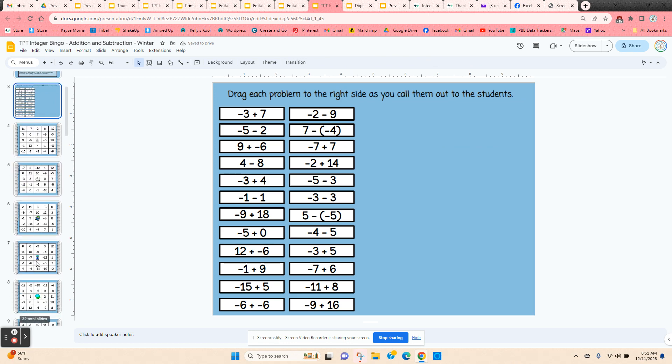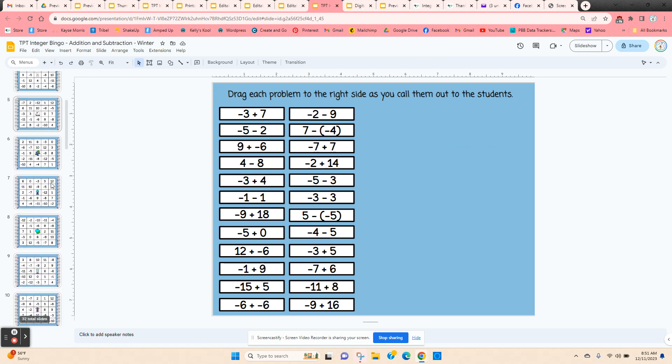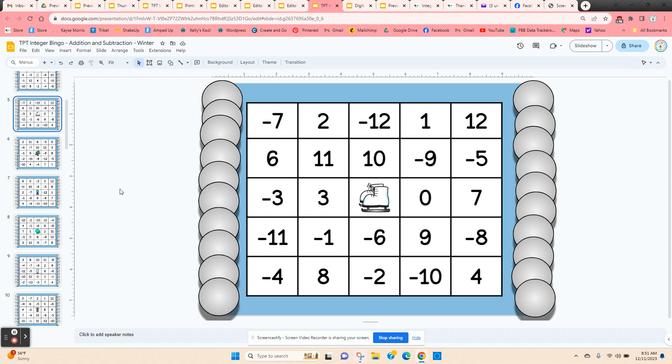I give the students editing rights so they can scroll up and down until they find the bingo card that they want. I have my students click in one of the chips and just type their name or initials. And that way the other students know that this board's been claimed and they need to go find another one.